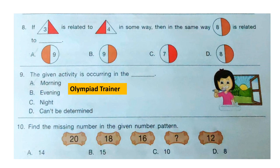Question 8: If a triangle is related to another triangle in some way, then in the same way this circle is related to dash. The first triangle shows 3 with half colored red, and the other triangle shows red first then the number 4 — the number increases and the color is on the opposite side. So we need a circle with color on the left side and number 9 on the right side. Option A is the answer.